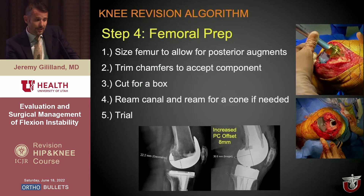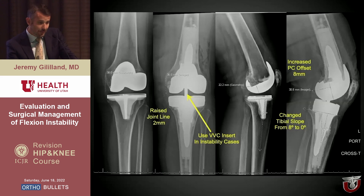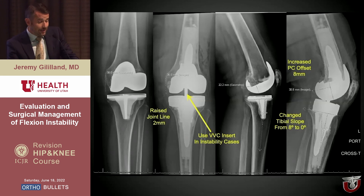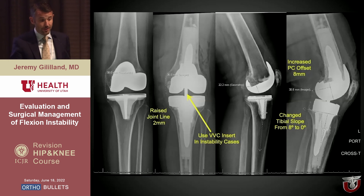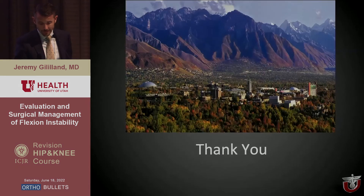In this case, the goal was to increase her posterior condylar offset — we increased it by eight millimeters. Overall, we raised the joint line two millimeters, removed the tibial slope, increased the posterior condylar offset, and balanced her knee. On top of that, I added varus-valgus constraint to ensure long-term stability — so even with a well-balanced knee, I'll add that constraint.